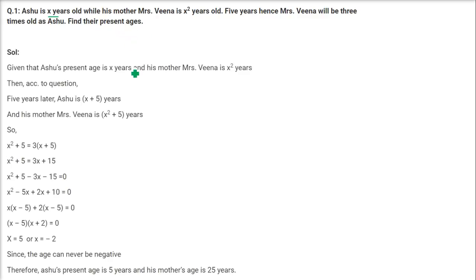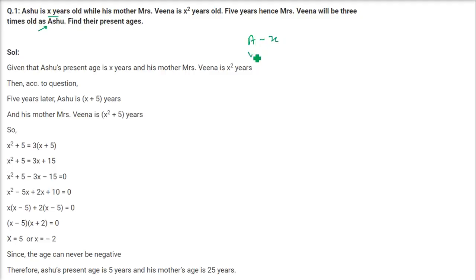We'll assume that Ashu's age is X years. It is already given, we don't have to assume it. And the mother's age is X squared. That is Ashu is X, and Veena, that is the mother's age, is X squared.